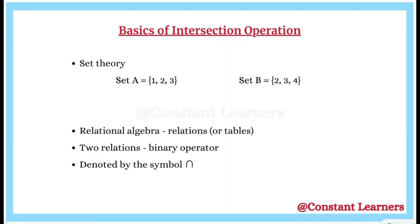Before we get into relational algebra, let's quickly recall what intersection means in set theory. If we have two sets — set A has 1, 2, 3 and set B has 2, 3, and 4 — the intersection of A and B will contain all the elements that are present in both sets, that is the common elements. So 1 is eliminated, 2 and 3 are common and included, and 4 is eliminated. It contains all elements common to both sets.